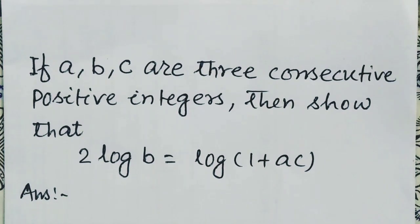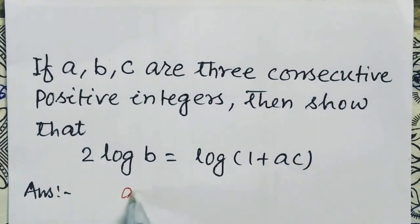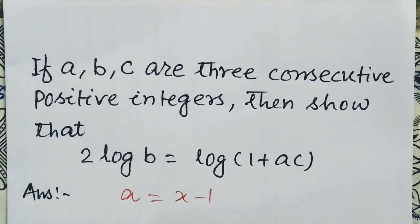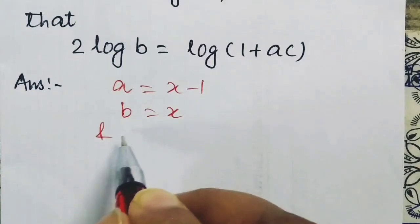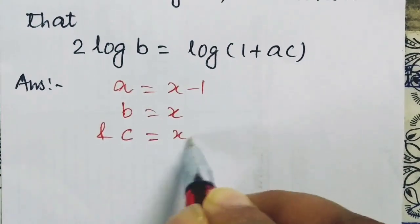Let three positive integers A, B, C be in the form A = x - 1, B = x, and C = x + 1.